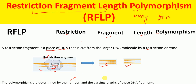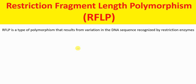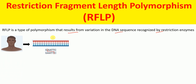Polymorphisms are determined by the number and the varying lengths of these DNA fragments. So RFLP is a type of polymorphism that results from variation in the DNA sequence recognized by a restriction enzyme.